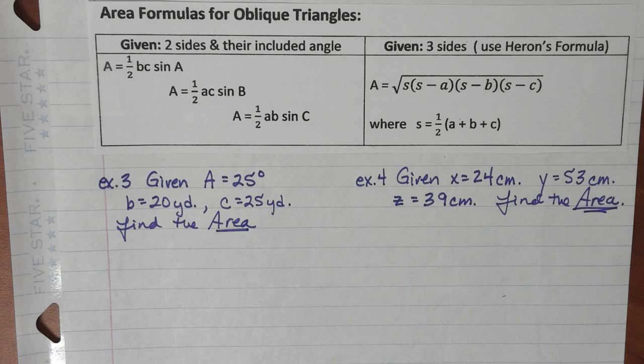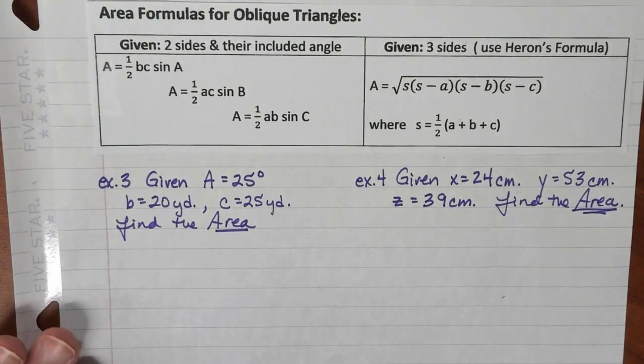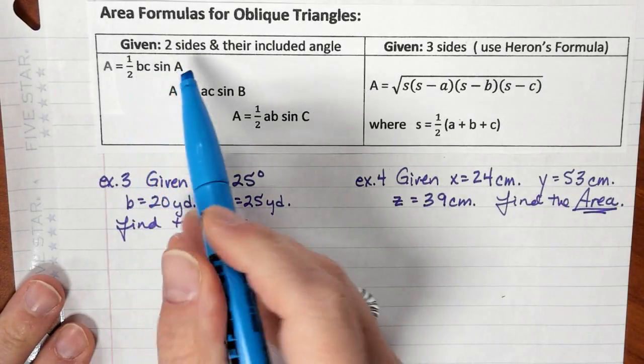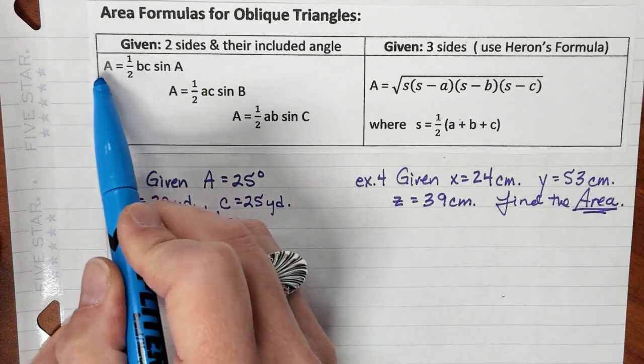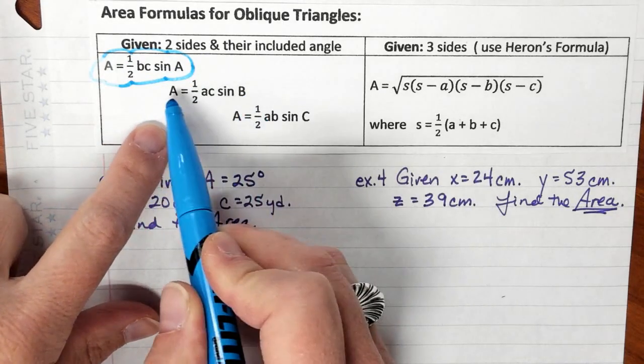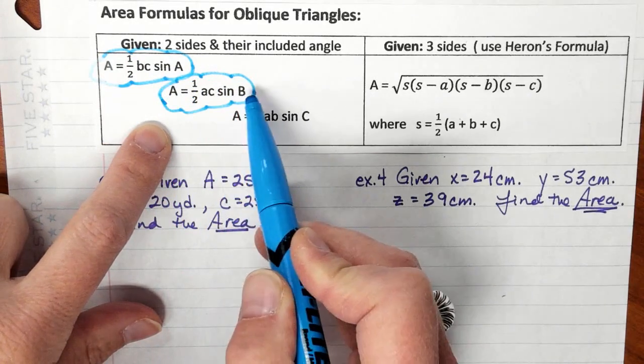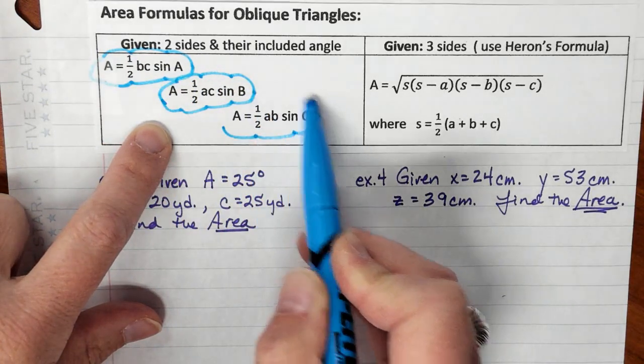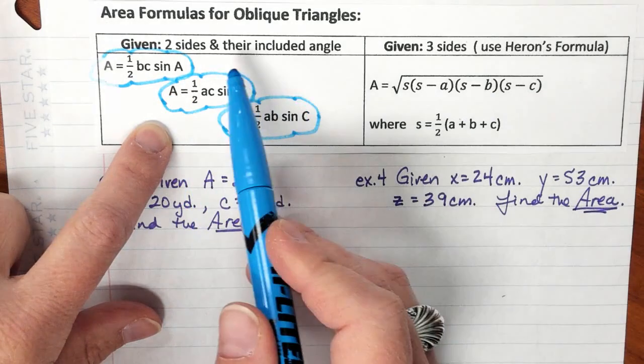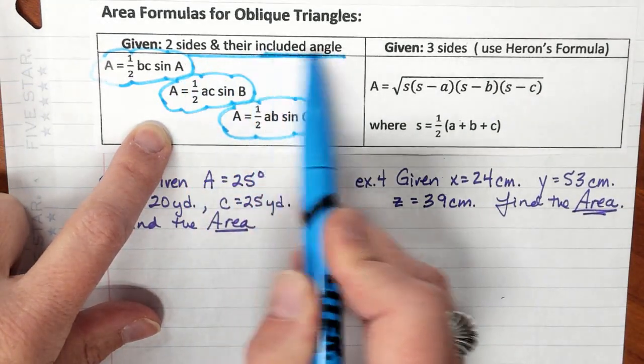We're going to look at some different formulas where one of them you're able to get the area of the triangle if you have two sides of the triangle and the included angle. For that particular formula, you're still going to take one half just like you normally did, but you're going to take one half of the two sides and then the sine of the included angle.